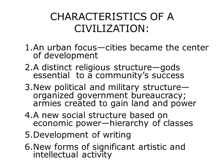The characteristics of a civilization — and these six elements are very important, know these back and forth. Number one: an urban focus. Cities became the center of development. All those small communities grew together into larger and larger communities, until eventually they became a city. Number two: a distinct religious structure. Gods became essential to a community's success. Keep in mind this is before anyone had any concept of science, chemistry, biology, or physics. They believed that gods were controlling things that could not be easily explained.